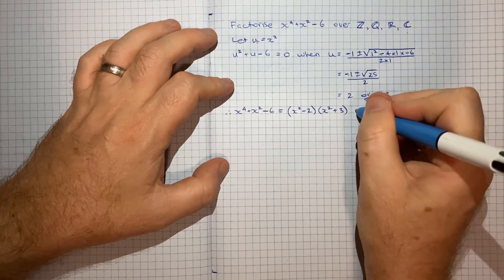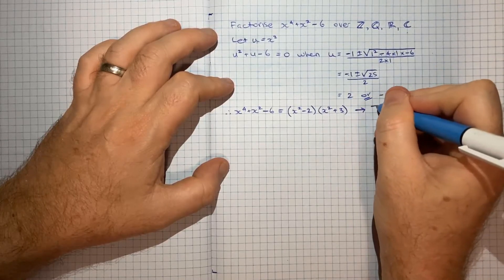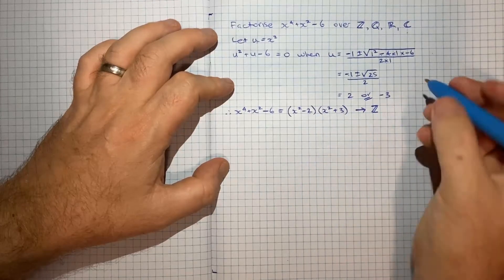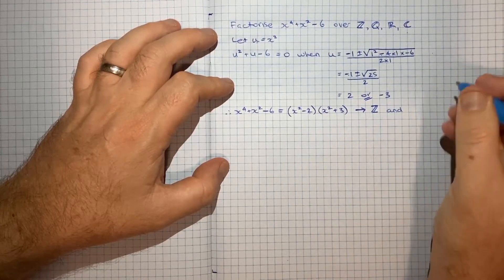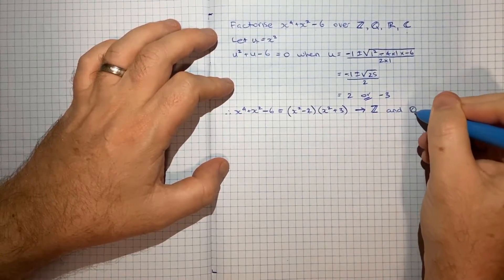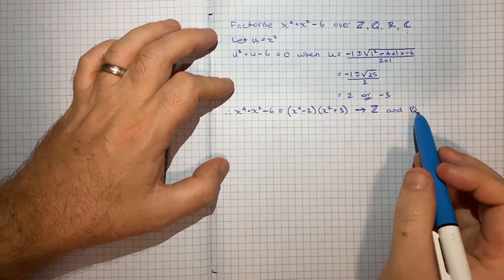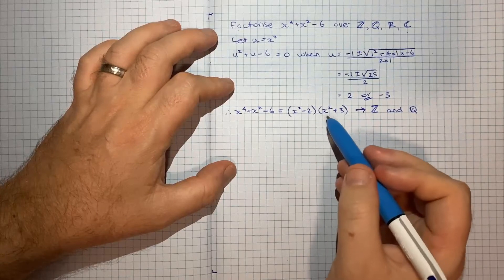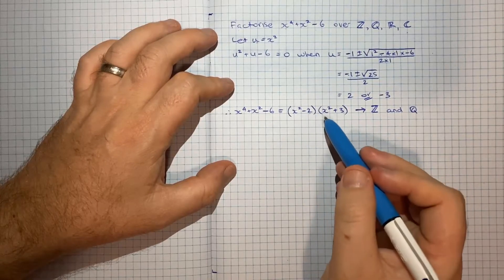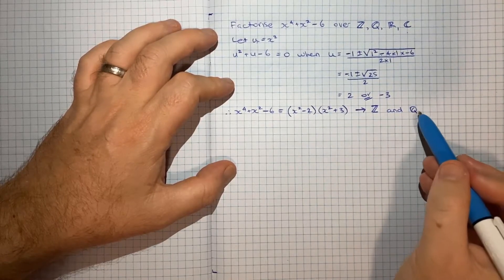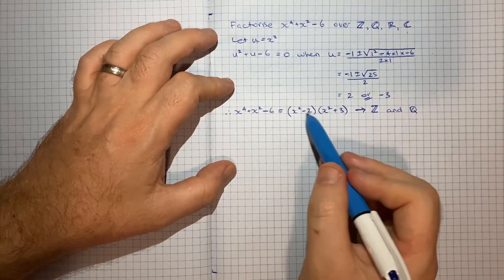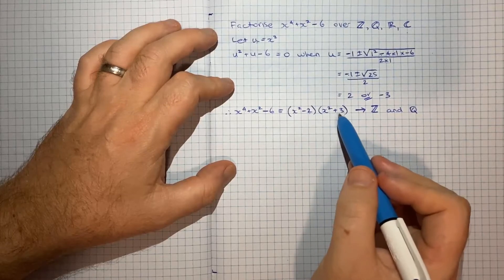And this, I think, is a factorisation over the integer set, because we can see these are both integers. But I also think it covers the rational set. And the reason I say that is because as we go further and continue to factorise, we're not going to get any specific numbers that are rational and not integers. We're only going to get some irrational numbers and some complex numbers.